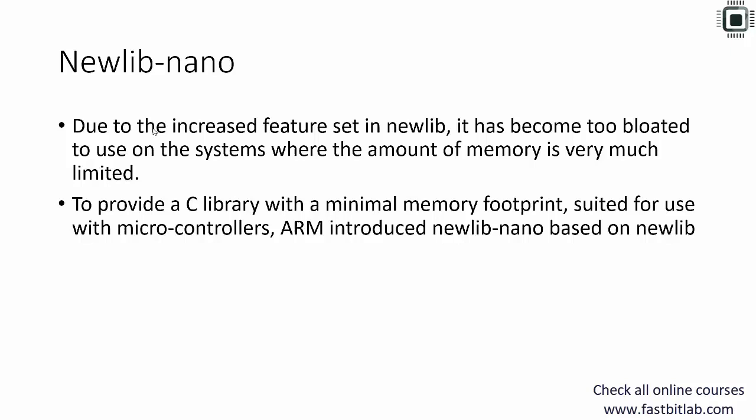How about NewLib Nano? Due to the increased feature set in NewLib, it has become too bloated for use on systems where memory is very limited, especially low-memory embedded systems. To provide a C library with minimal memory footprint suited for microcontrollers, ARM introduced NewLib Nano, which is based on NewLib. NewLib Nano is a reduced feature version of NewLib — for example, it doesn't support float data types by default; you have to pass extra compiler arguments. In this exercise, I'll be using NewLib Nano.